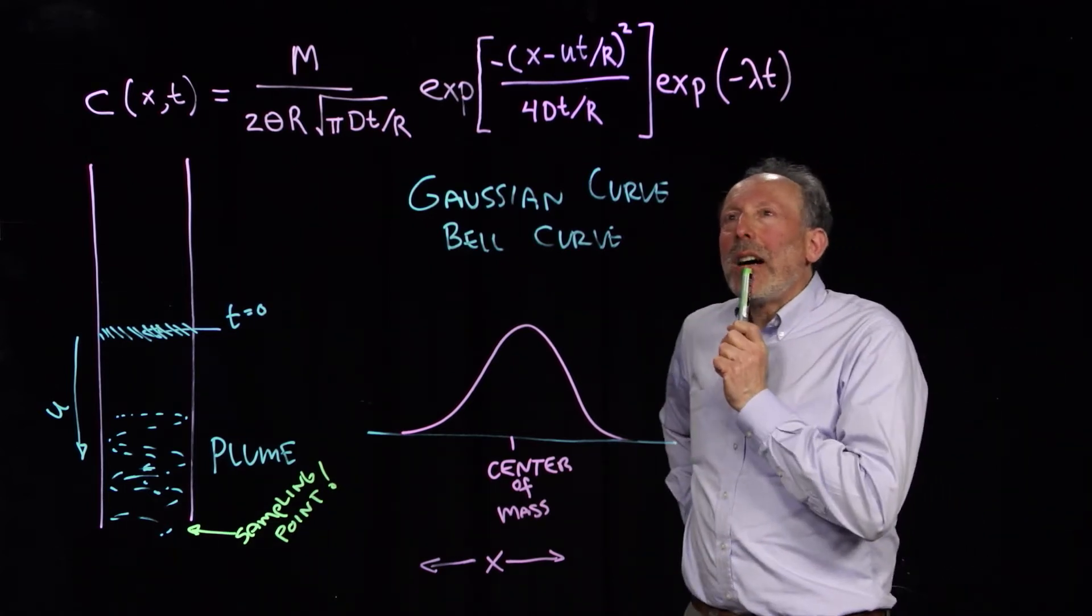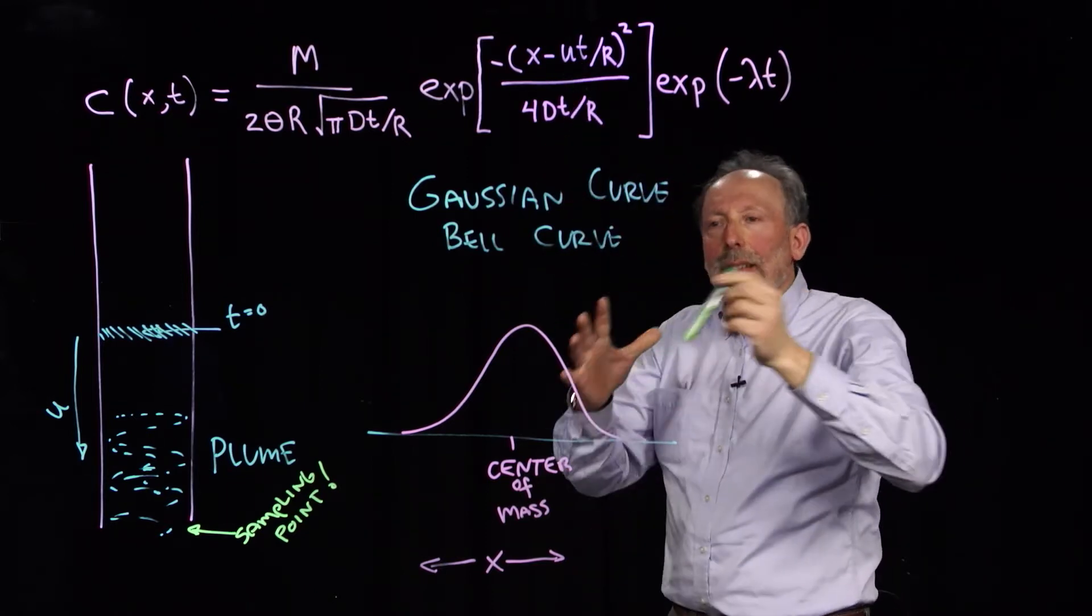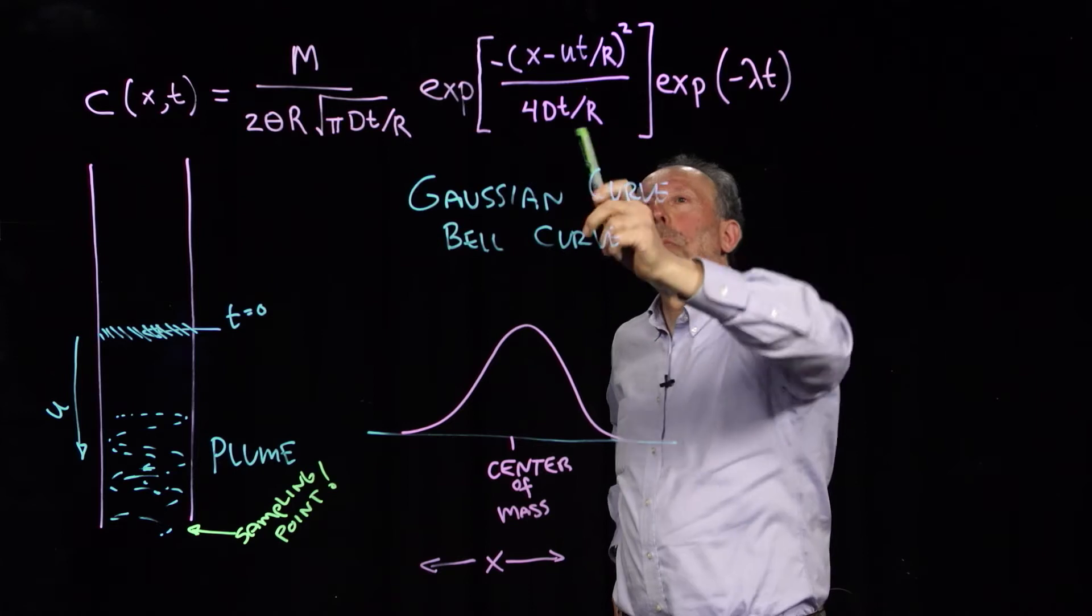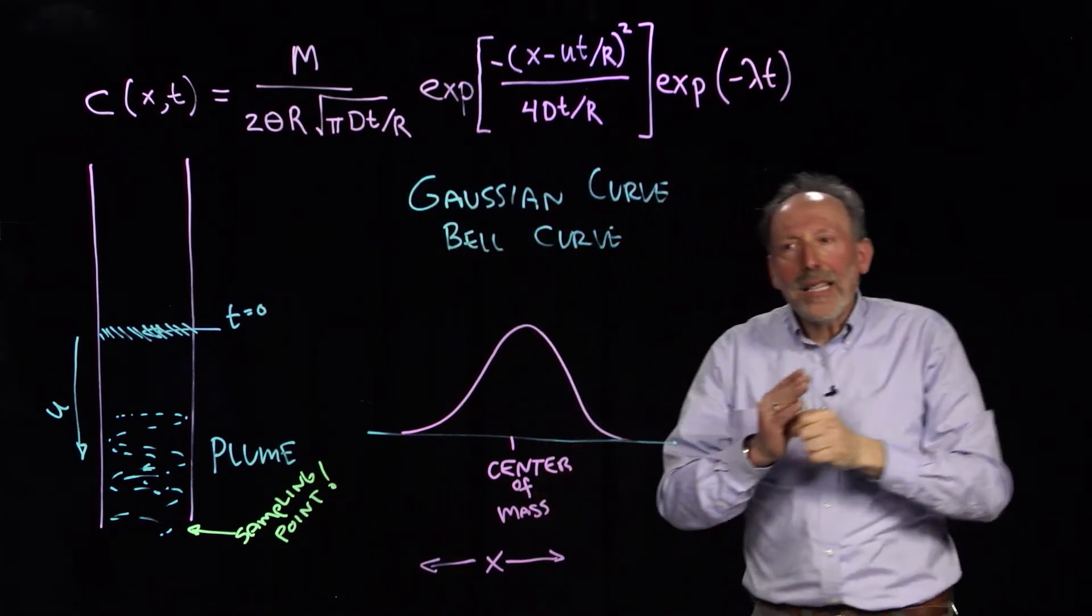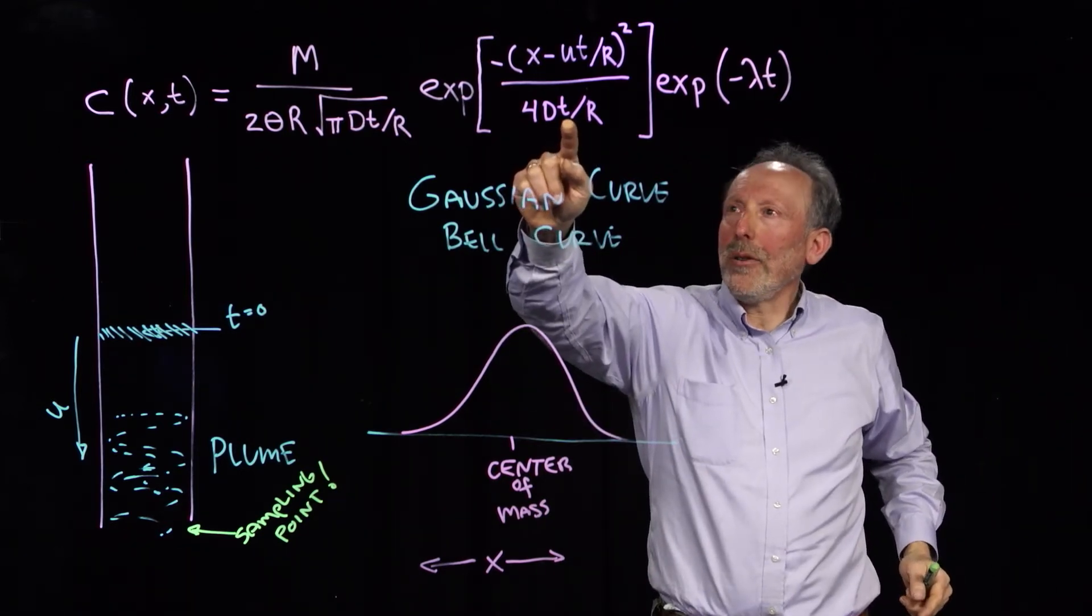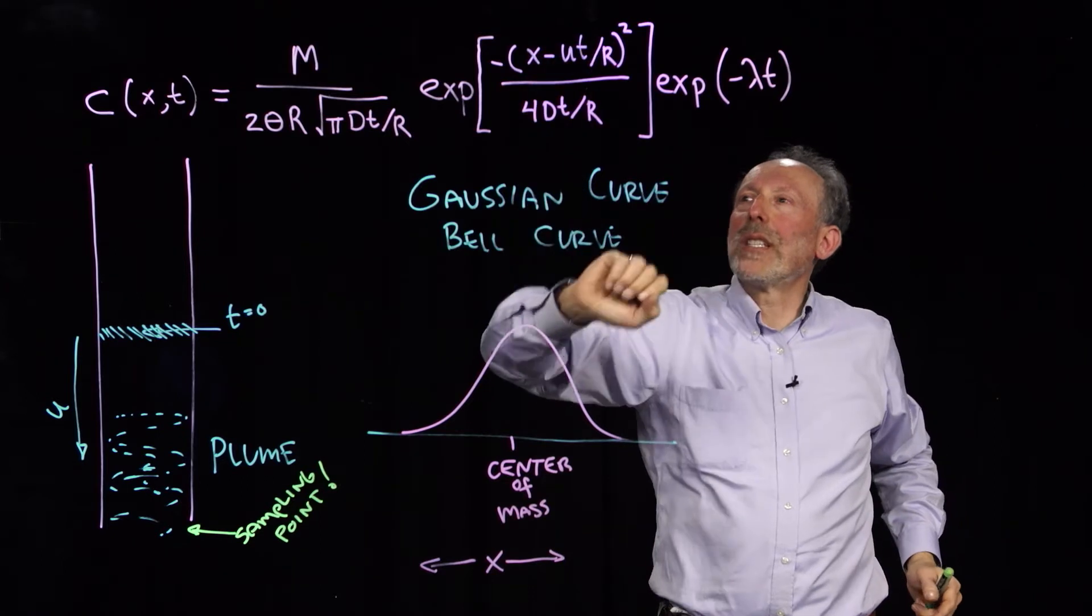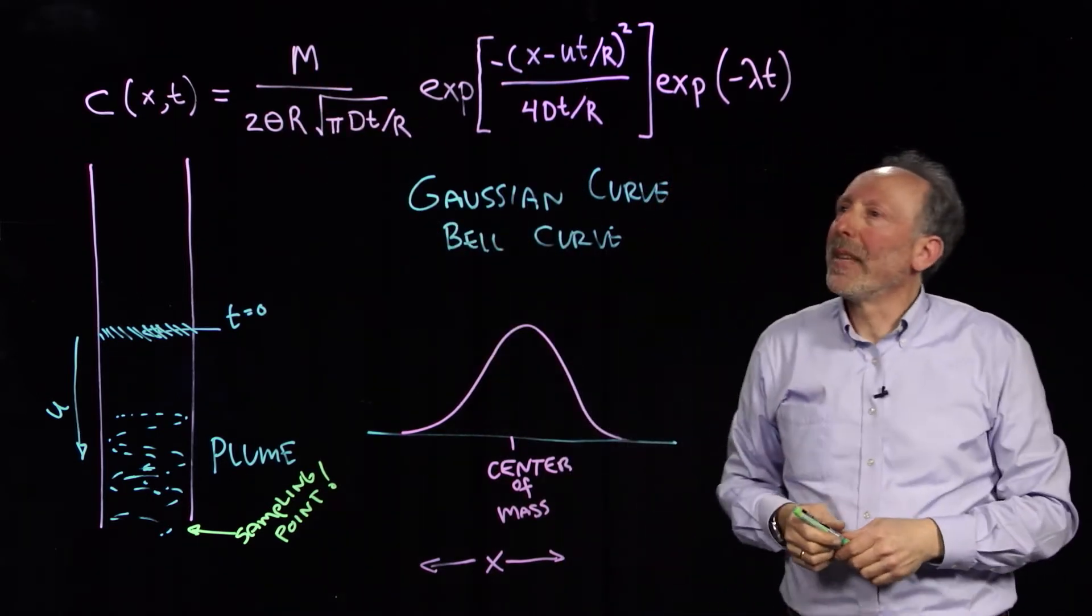Now, let's look at time. Time shows up here as we saw before, like x. So in a sense, you'd think it'd be symmetrical. But time also shows up here and here. So as time goes on, this number gets bigger, which reduces the size of this. And this number gets bigger, which reduces the size here.